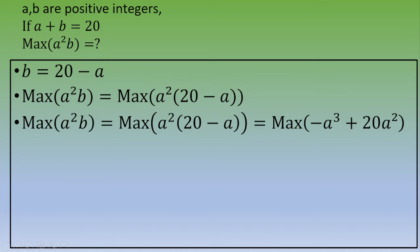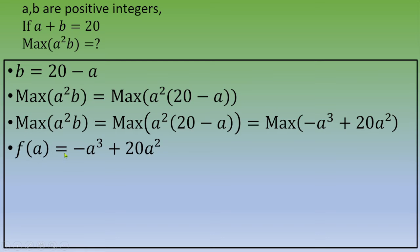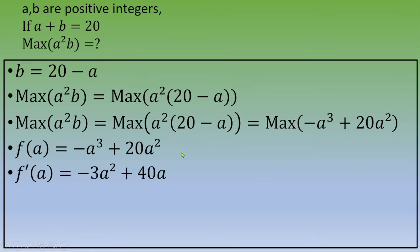This is also equal to the maximum of, distributing, negative A cubed plus 20 A squared. Finding the maximum of this quantity is an optimization problem. So let's define a function F such that F(A) equals negative A cubed plus 20 A squared. To find the maximum point, we calculate the first-order derivative: F prime of A equals negative 3A squared plus 40A.